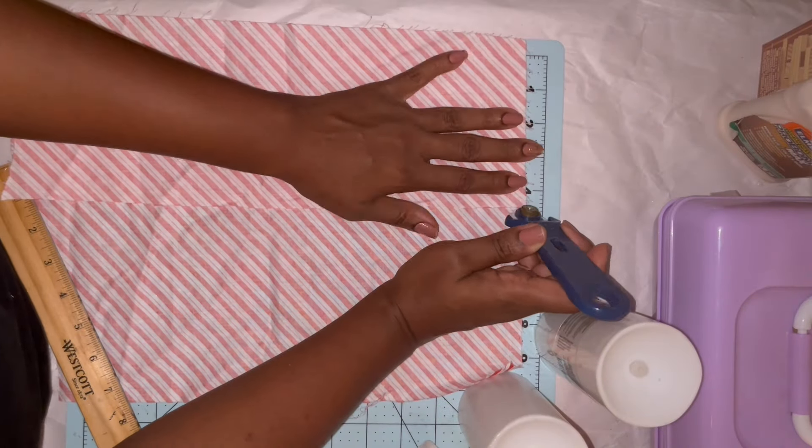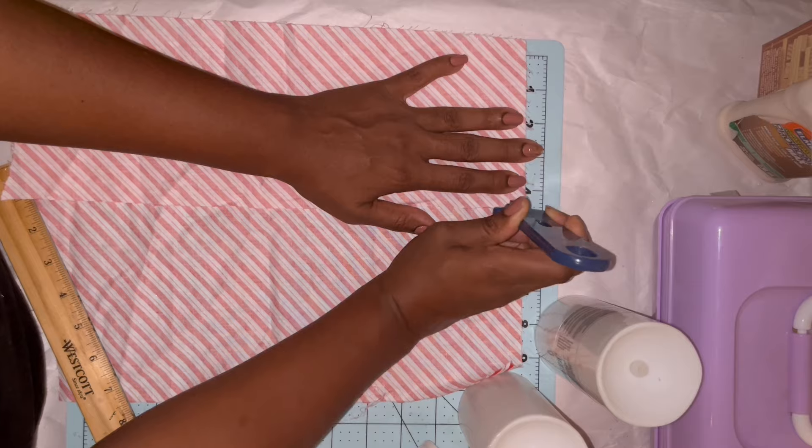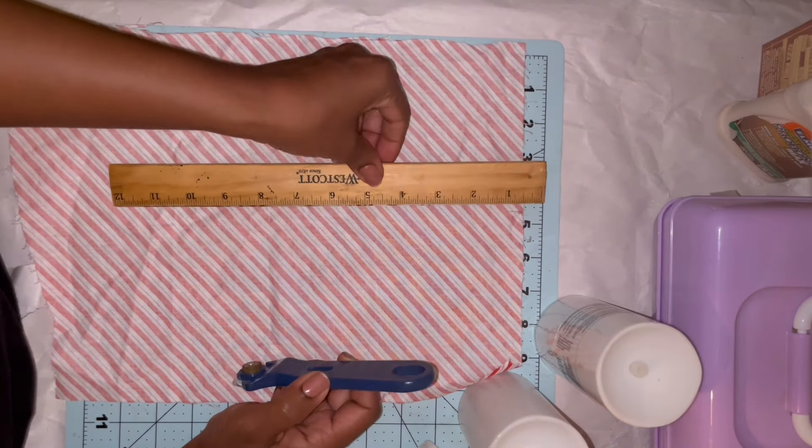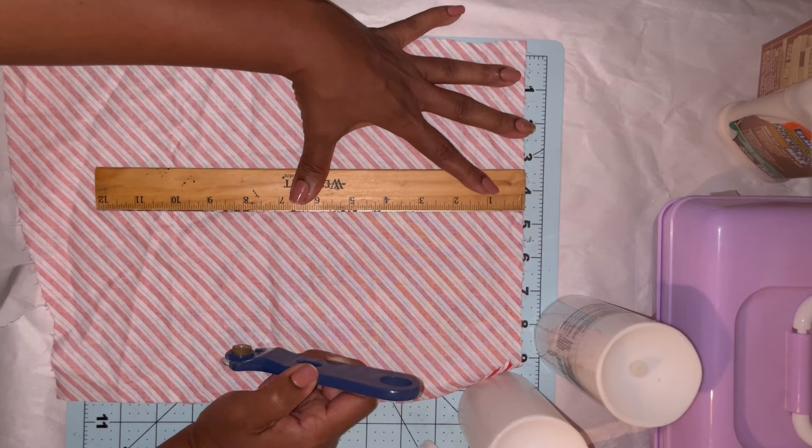So I take that first strip and just lay that onto my excess fabric and use that as a template to go ahead and make my second round of cuts.